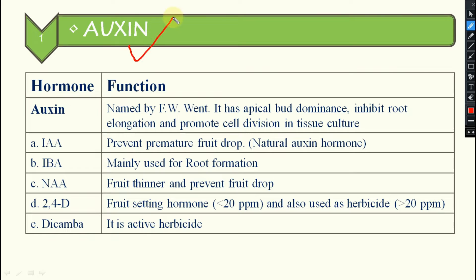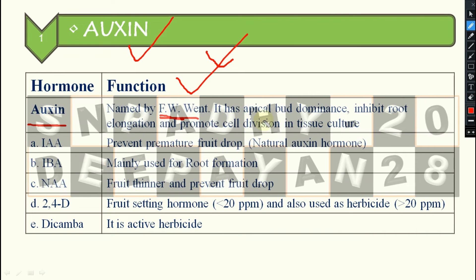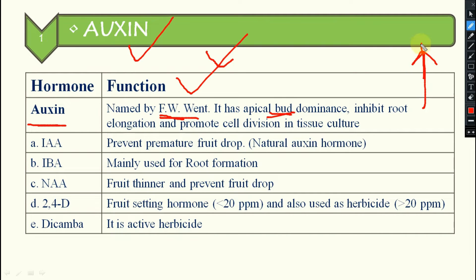First, coming to auxin. This growth hormone auxin was named by F.W. Went — very important, who has given the name auxin. It has apical dominance, meaning whatever the above-ground dominance is there, apical growth will be dominated by this hormone auxin. But it will inhibit root elongation — below-ground things will be somewhat inhibited. It also promotes cell division in tissue culture.